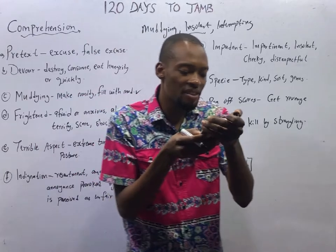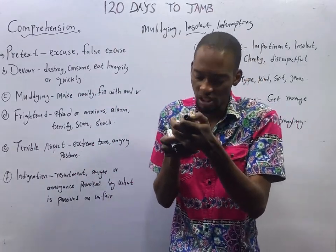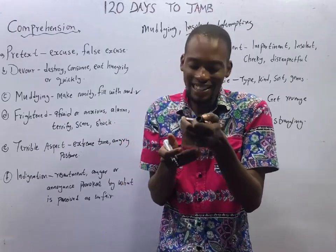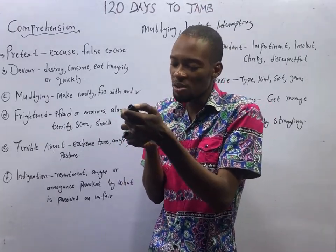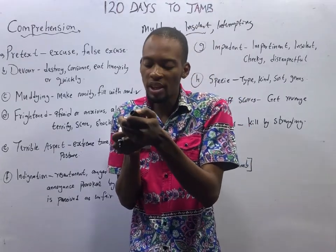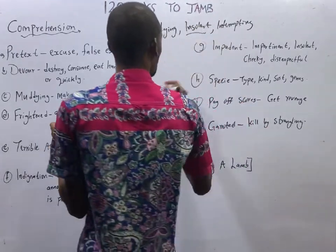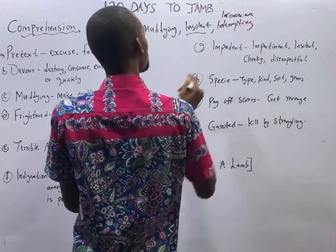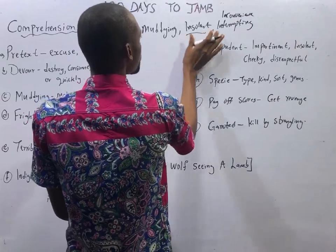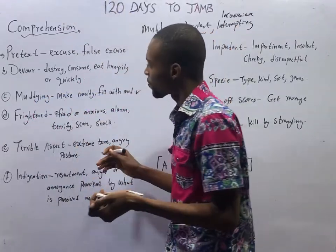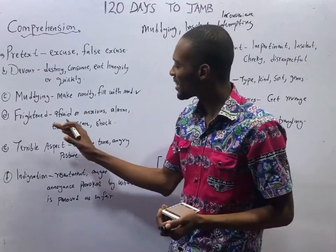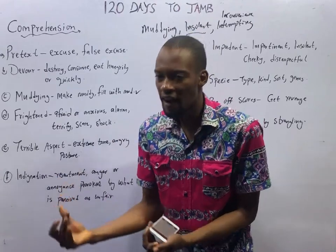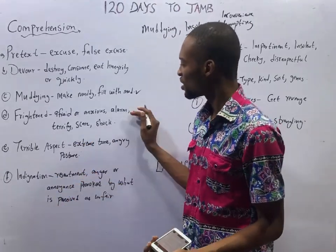The lamb, frightened at the wolf's angry tone and terrible aspect, told him with all due submission — with all due respect — that he could not conceive how his walking on such a wide path could occasion him any inconvenience. Frightened means to be afraid, anxious, alarmed, or terrified.